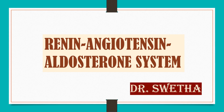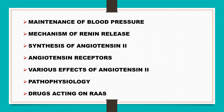Hello guys, welcome to Pharmacology Shots. This is a short video lecture series on the renin-angiotensin-aldosterone system, which will be covered in four different parts. In this lecture, I am going to deal with the renin-angiotensin-aldosterone system in general and angiotensin 2 in particular, which includes maintenance of blood pressure, mechanism of renin release, synthesis of angiotensin 2, angiotensin receptors, various effects of angiotensin 2, pathophysiology, and drugs acting on the renin-angiotensin-aldosterone system.